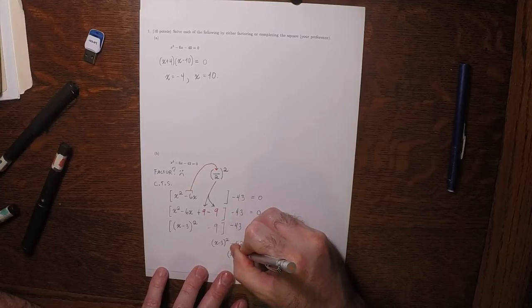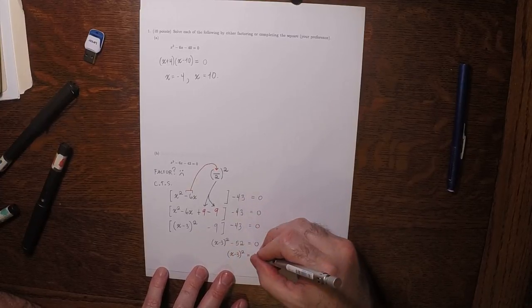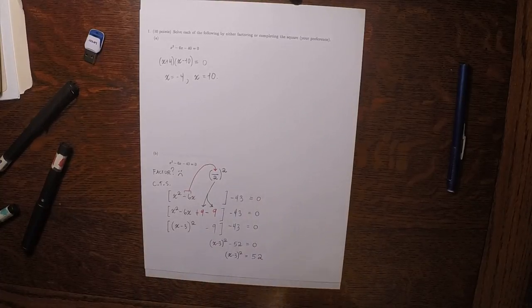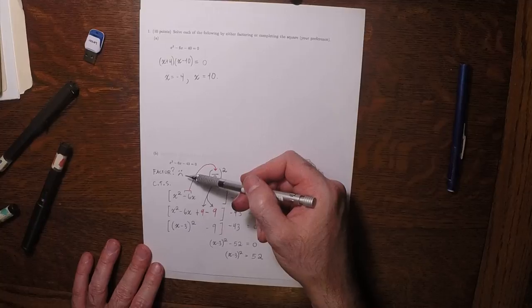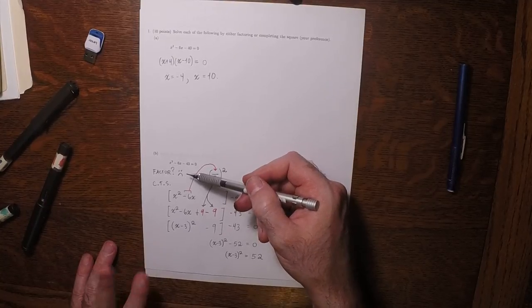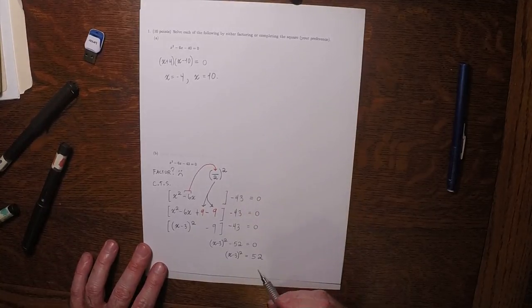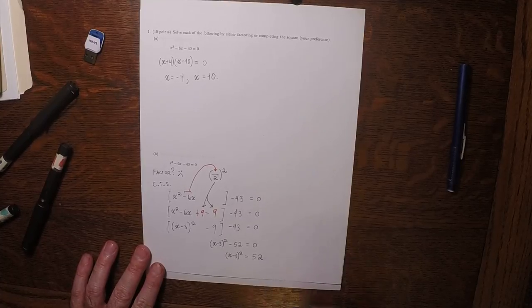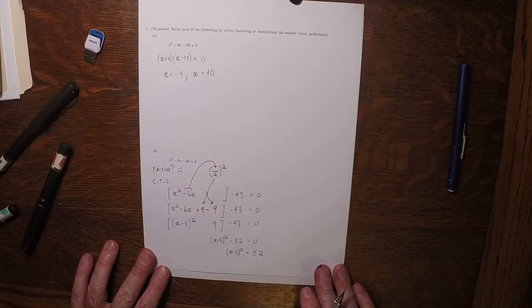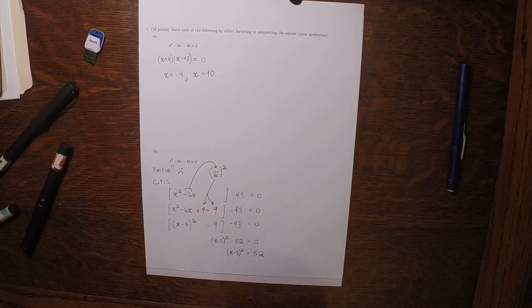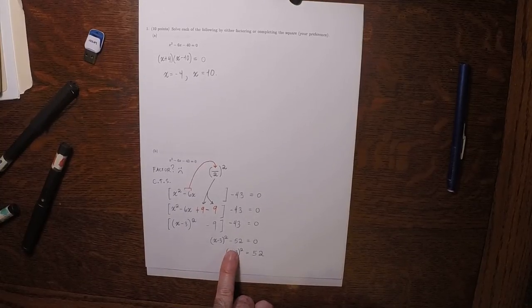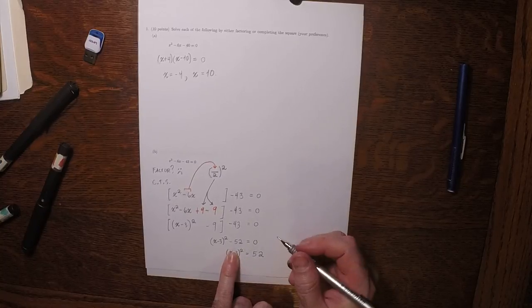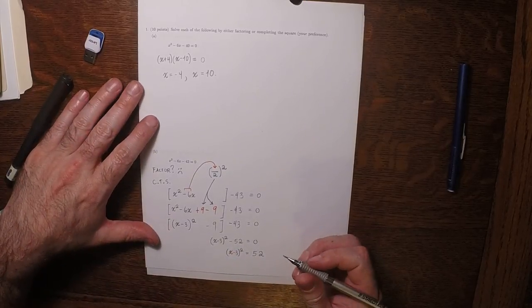So (x - 3) squared is 52. So we couldn't figure out how to factor it, and in the end, the reason why we couldn't figure out how to factor it is more or less because 52 doesn't have an integer square root. So we want something to square that will end up being 52. Well, there's two possible answers.